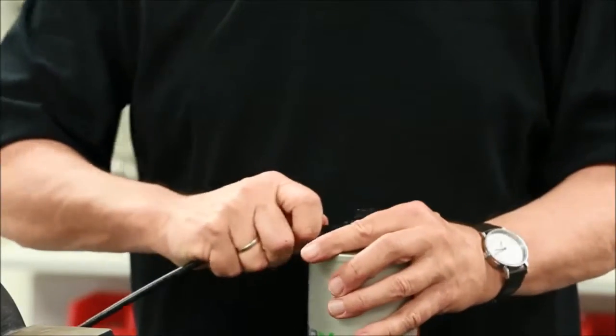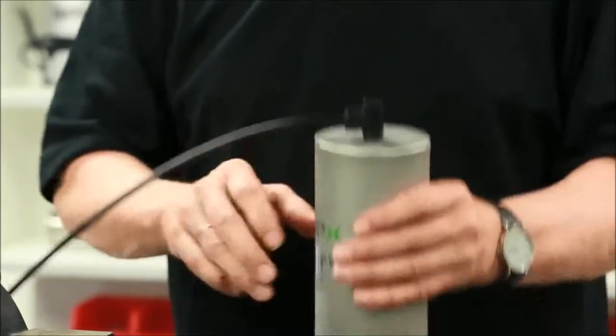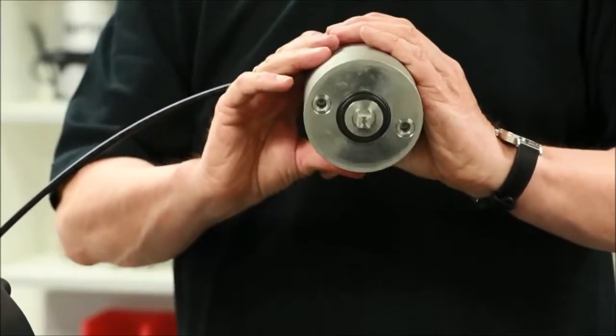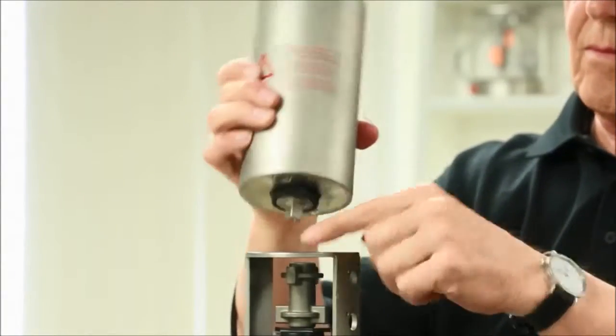Next, ensure the actuator is in the open position by supplying it with compressed air. Place the actuator so that the stem is inserted into the coupling correctly and that the bolt holes align between the actuator and the yoke.